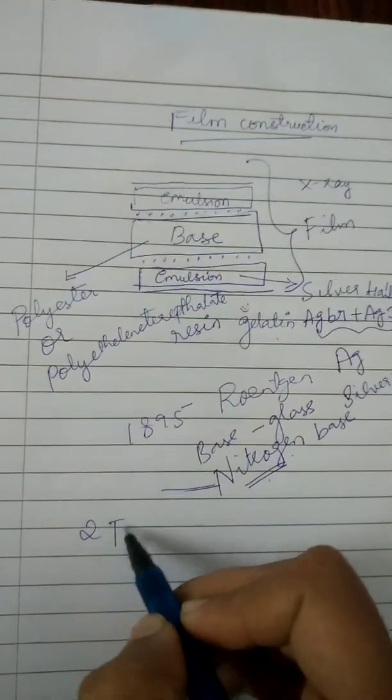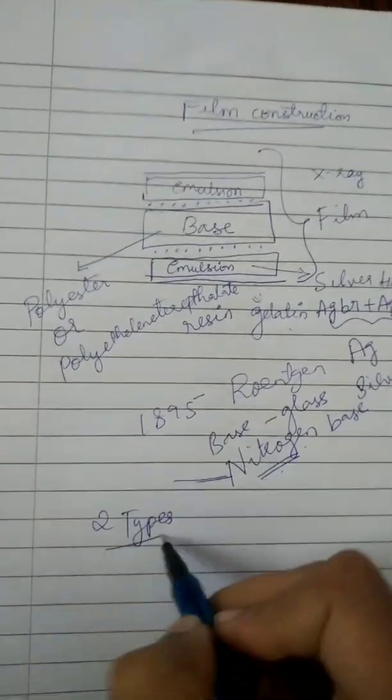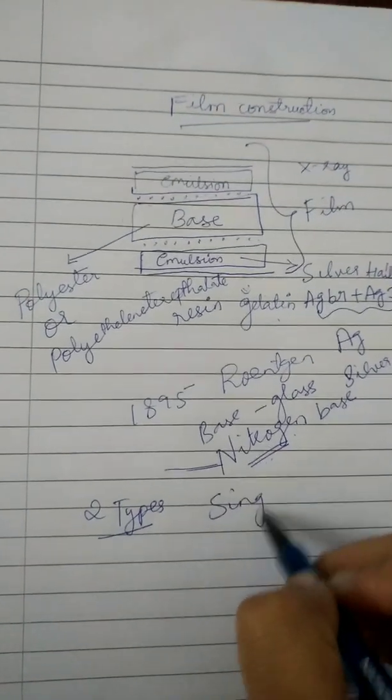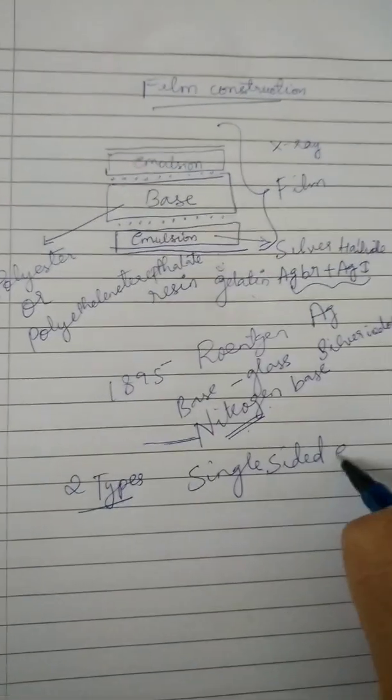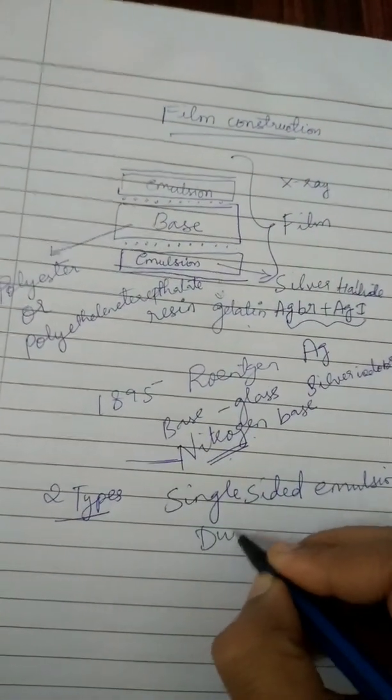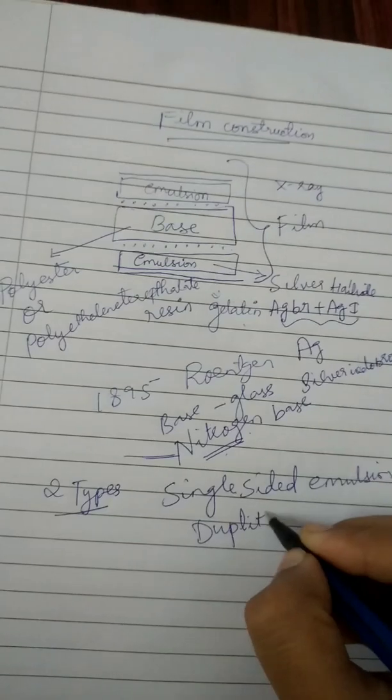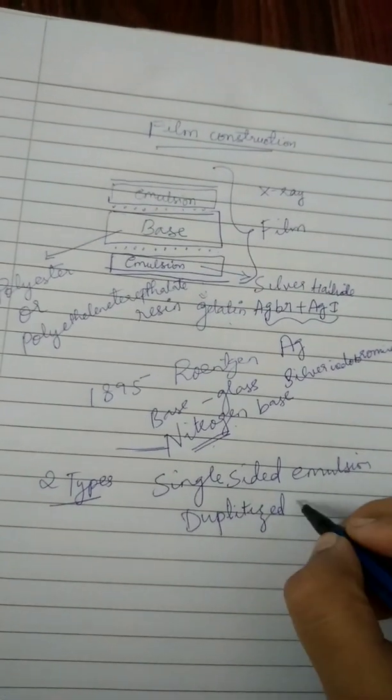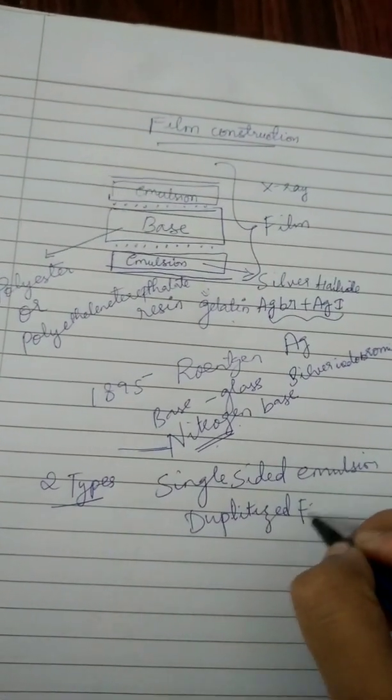And there are two types of film. One is single sided emulsion and dupletized film.